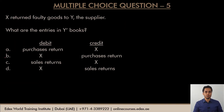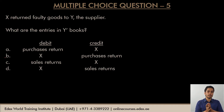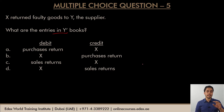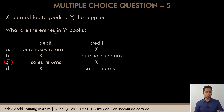X returned faulty goods to Y, the supplier. What are the entries in Y's books? Y is the supplier who supplied goods to X, the customer. Even though the question starts from X's point of view, you have to think from Y's perspective because they are asking for entries in Y's books. For Y, it was a sale, and when X returned the goods it was a sales return. You should know that when a customer returns goods, the sales returns account is debited and the customer's account is credited. So the correct option is option C. Purchase return is out of question for Y, so A and B are no, and D is also no because the sales returns account is never credited — it is only debited.